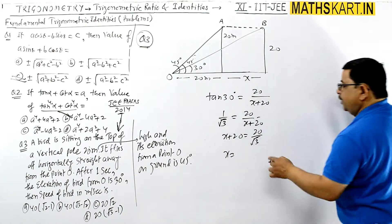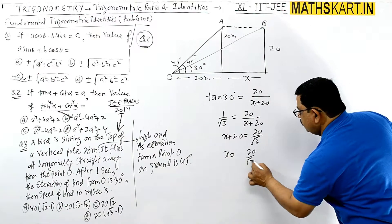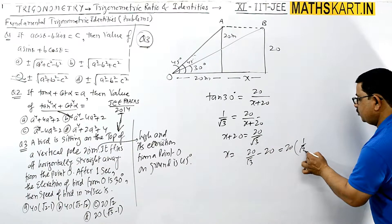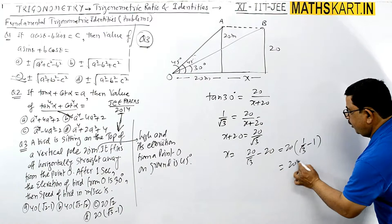So x equals to 20 root 3 minus 20. So you can take out 20 common: 20 into (1 by root 3 minus 1).